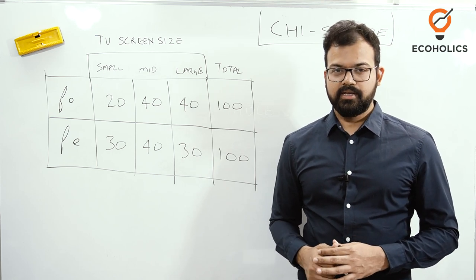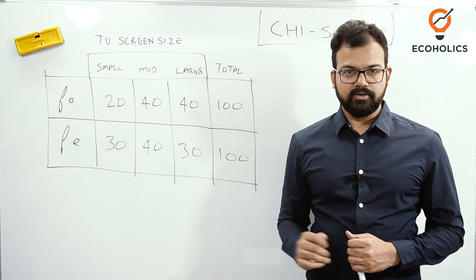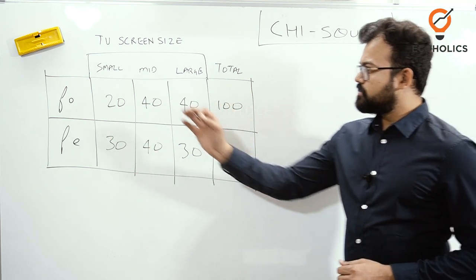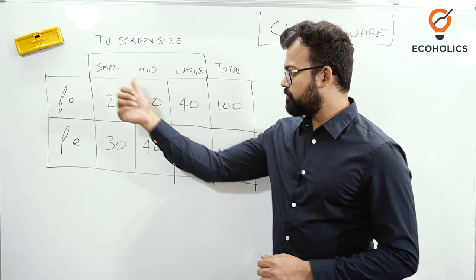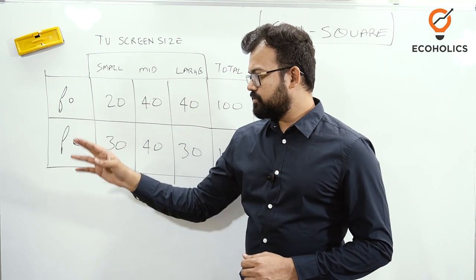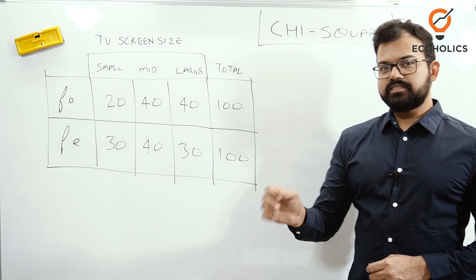This is part two where we will discuss numerical problems. Here is the numerical problem in front of you. You can see this is the TV screen size: small size, medium size, and large size. You can see this is the observed frequency and this is the expected frequency.